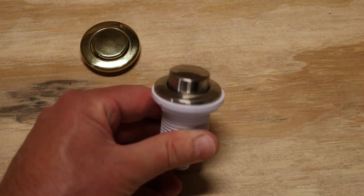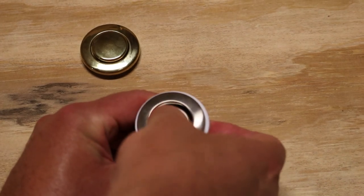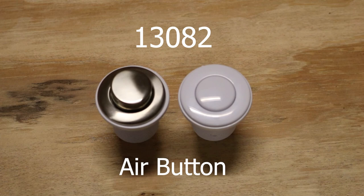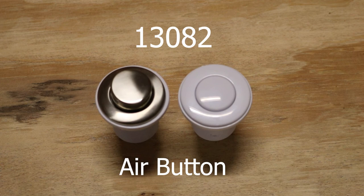That's everything you need to know about the 13082 air button from Balboa Water Group, used by Gruber Hydro and many other bath manufacturers over the years. We are your whirlpool tub parts authority. Be sure to like, share, and subscribe to our videos.